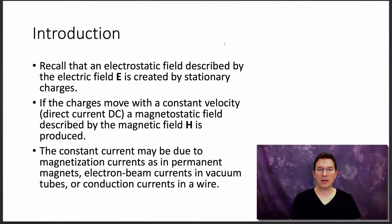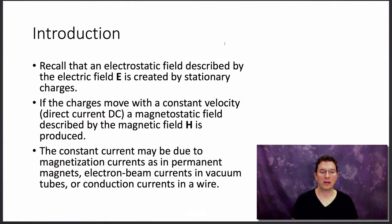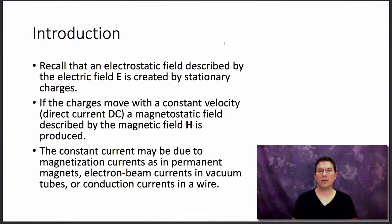By way of introduction, I'd like you to think about what we've just done in electrostatics. Recall that an electrostatic field described by the electric field E is created by stationary charges. However, if the charges move with a constant velocity, which corresponds to a direct current, a magnetostatic field described by the magnetic field H is produced in that region of space. The constant current may be due to magnetization currents as in permanent magnets, electron beam currents in vacuum tubes, or simply conduction currents in a wire.